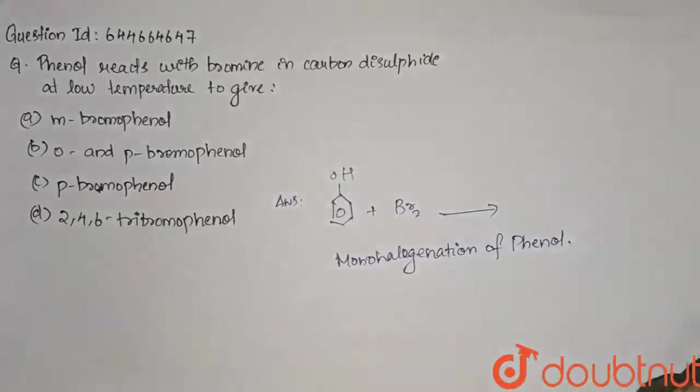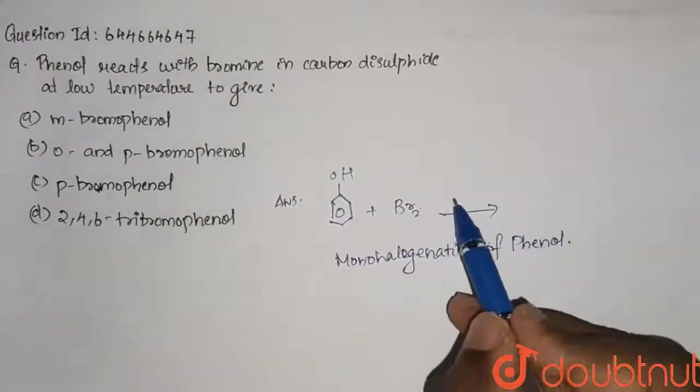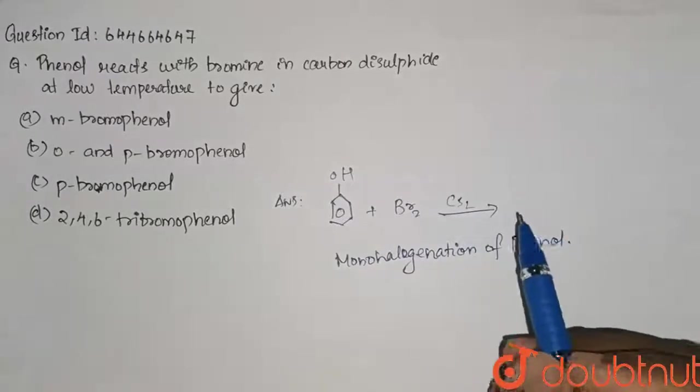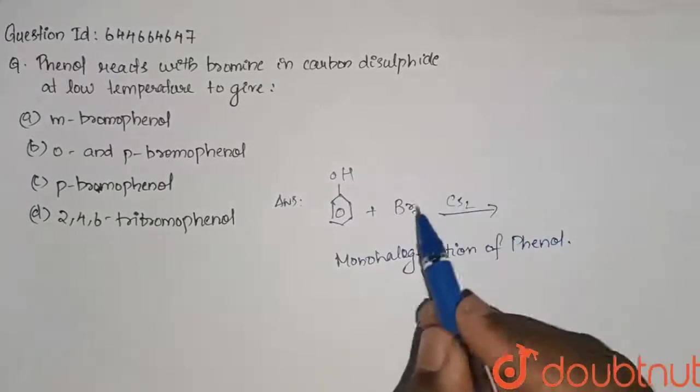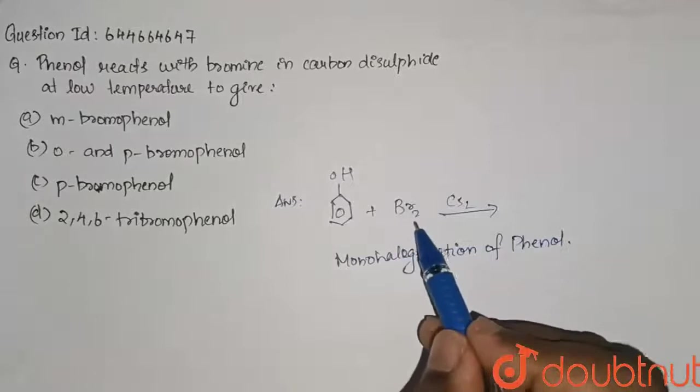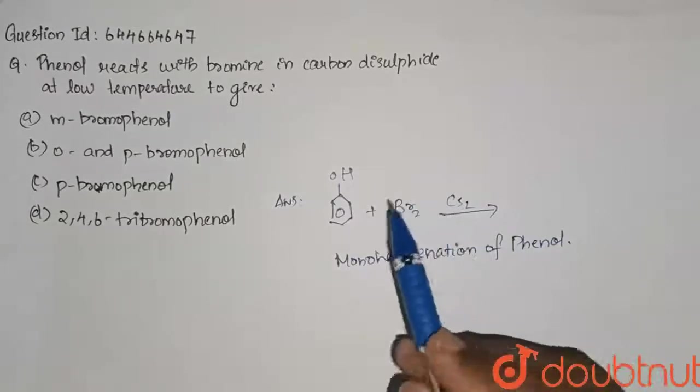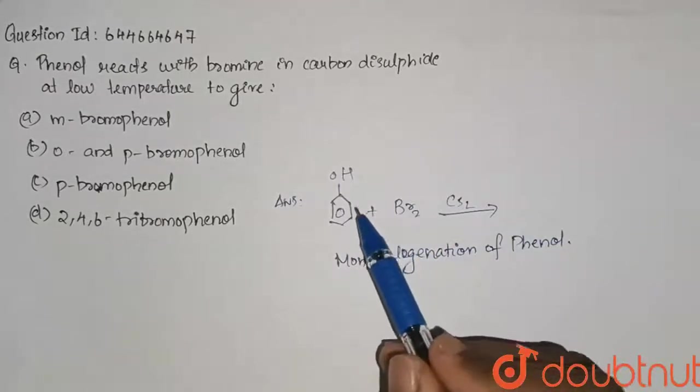So, what happens is the CS2 decreases the electrophilic reactivity of Br2. Therefore, it will get attached to only one position in the phenol.